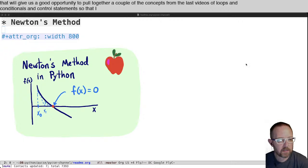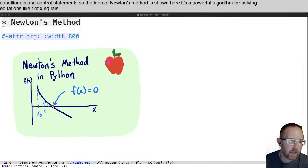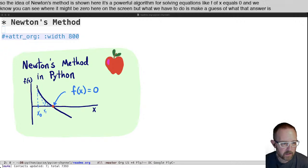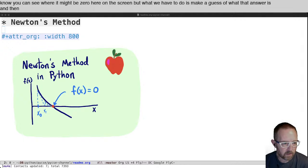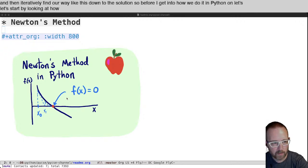So the idea of Newton's method is shown here. It's a powerful algorithm for solving equations like f of x equals zero. And we know you can see where it might be zero here on the screen. But what we have to do is make a guess of what that answer is and then iteratively find our way like this down to the solution. So before I get into how we do it in Python, let's start by looking at how to derive Newton's method and how it ends up working.